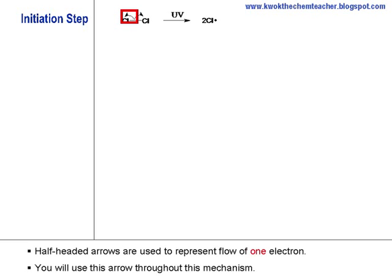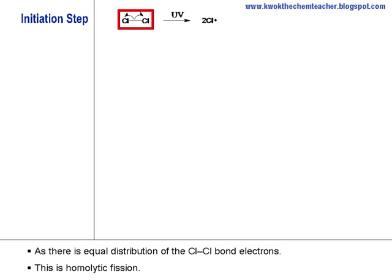In the mechanism, you need to show how electrons are being moved. In this case, half-headed arrows are being used to represent the flow of one electron. Since there is an equal distribution of the Cl-Cl bond's electrons, this is what we describe as the homolytic fission.